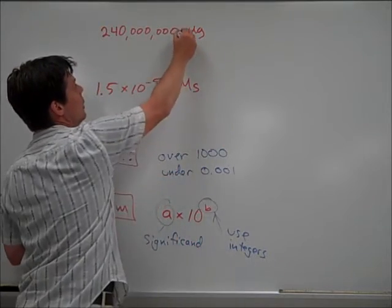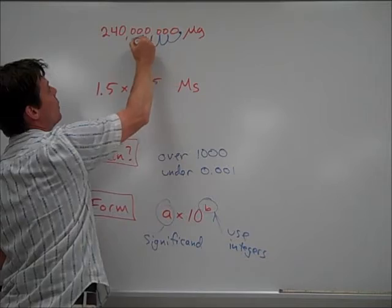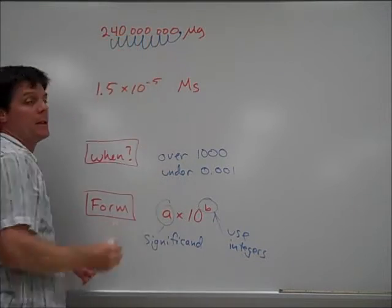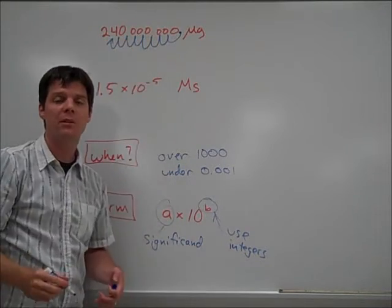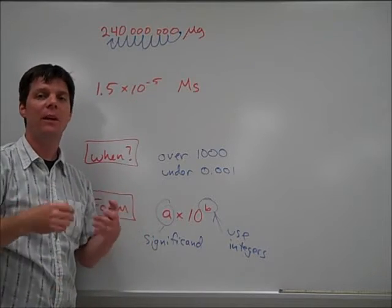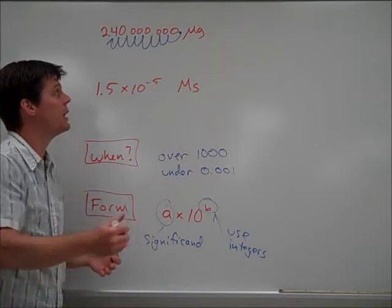Let's move the decimal. 1, 2, 3, 4, 5, 6, 7, 8. We've moved the decimal 8 places over. So, this is giving us information about writing our number in scientific notation.